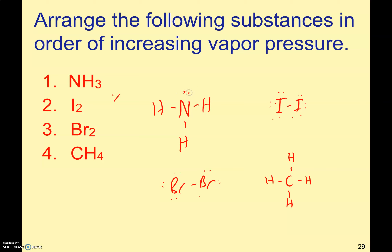I drew the Lewis structures for you, so you might want to pause the video and draw the Lewis structures. The molecule that has the highest vapor pressure — if you want a high vapor pressure, it would be the one with the weakest intermolecular forces, because the more molecules are able to escape into the gas form when the intermolecular forces are weak. If there are weak intermolecular forces, more molecules escape into the gas form.